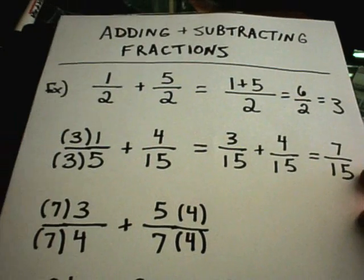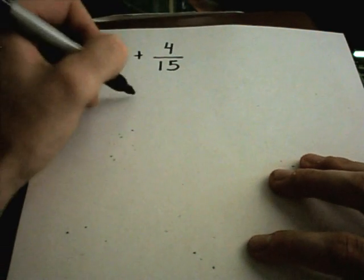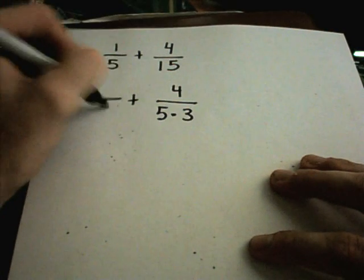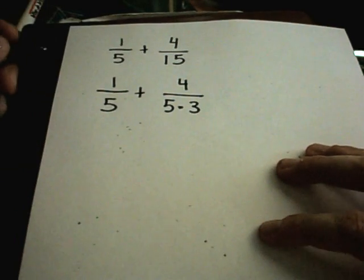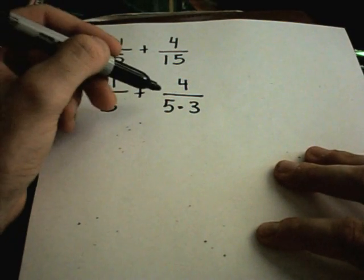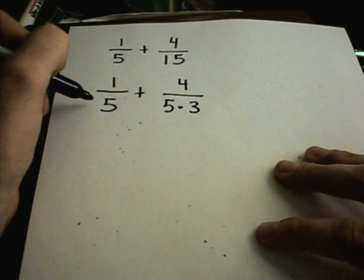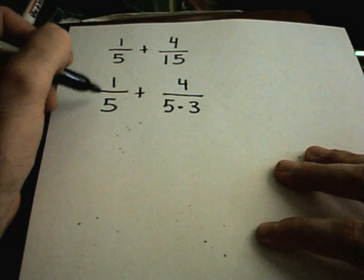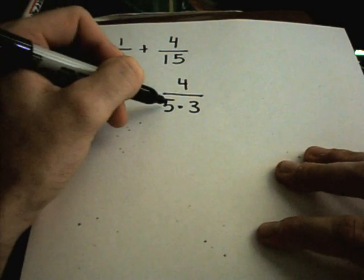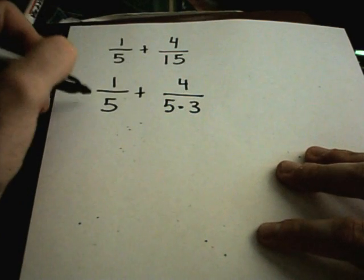If we look at this example one more time, let's go back to our 1 fifth plus 4 fifteenth example. Notice I can basically factor 15 as 5 times 3. When you want to get common denominators, if you look at the denominators of all the fractions, if you see anything that's in the bottom of one fraction but is missing from the other, you'll have to multiply top and bottom of that fraction by that number. I see a 5 in the denominator here, but I have a 5 already. I see a 3 down here, but I don't see a 3 down here.